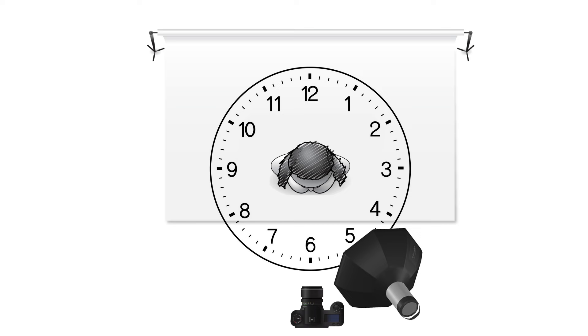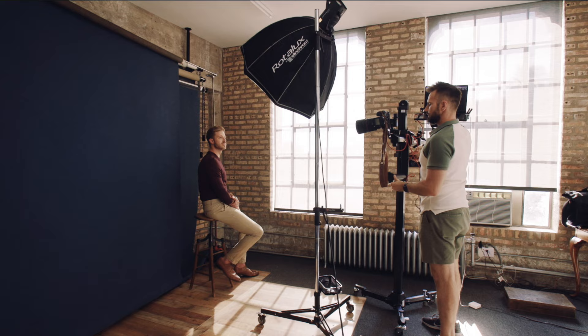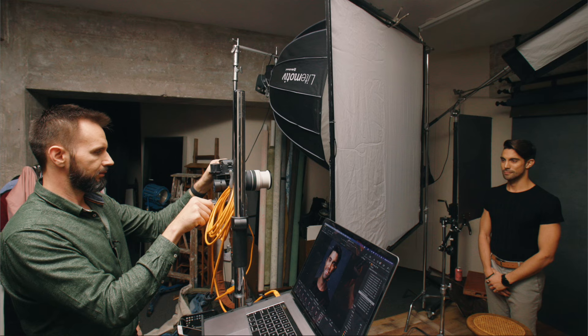Loop lighting involves positioning the main light just above eye level at approximately 5 or 7 o'clock. This creates subtle shadows on one side of your subject's nose and is generally pleasing for most people. If their nose bends to one side, you might get better results if you light on the side their nose bends towards. My nose goes very slightly to my right, so I always light myself from the right — that's the reason you always see me lit the same way.